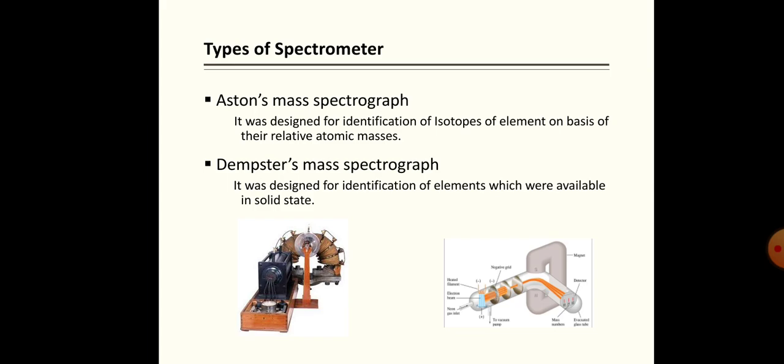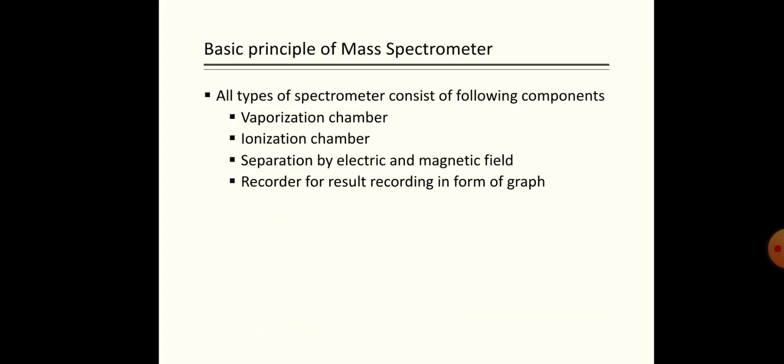That is, the element may be in solid state, liquid state, or gaseous state — we can measure masses of isotopes using the Aston mass spectrograph. The Dempster mass spectrograph was designed for identification of isotopes which are available in solid state only. Each type of spectrometer consists of the following components.